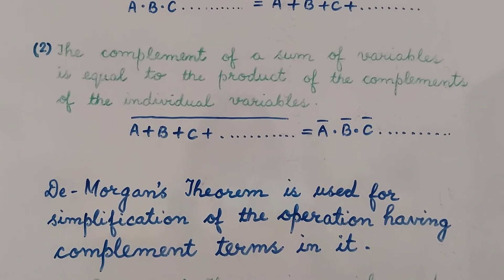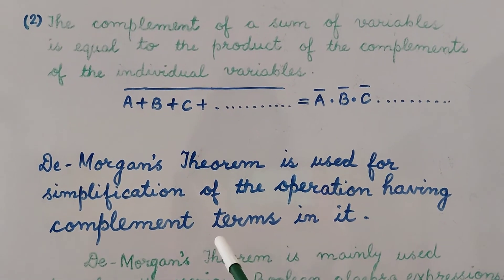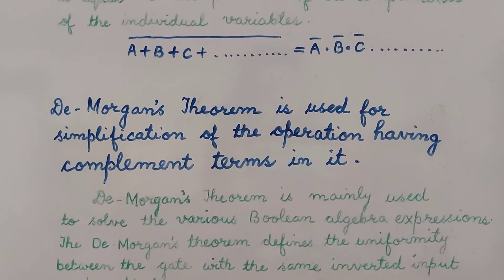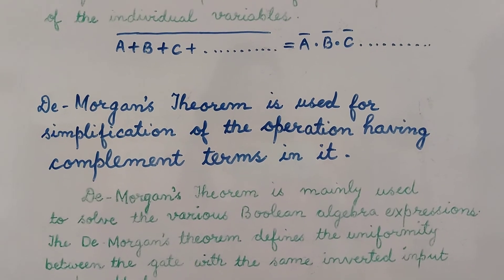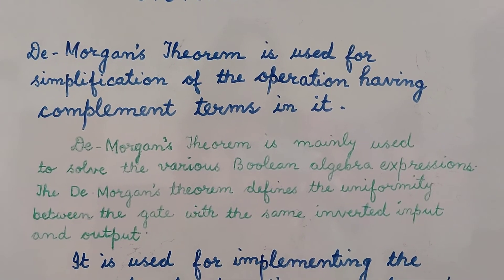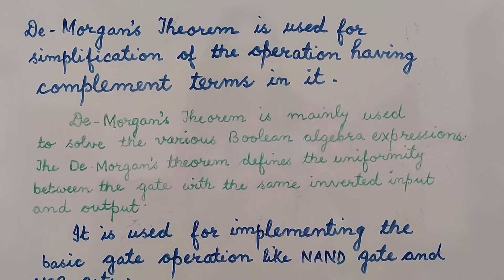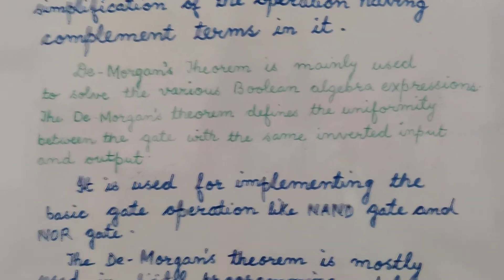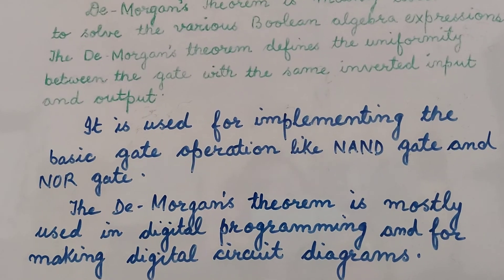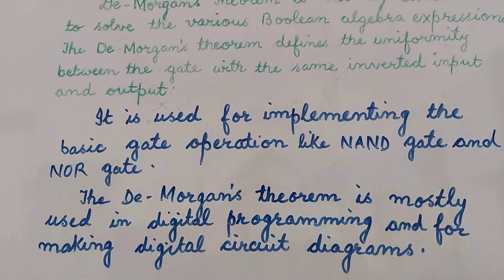De Morgan's theorem is used for simplification of operations having complement terms. It is mainly used to solve various Boolean algebraic expressions and defines the uniformity between gates with the same inverted input and output. It is used for implementing basic gate operations like NAND and NOR gates, and is mainly used in digital programming and for making digital circuit diagrams.